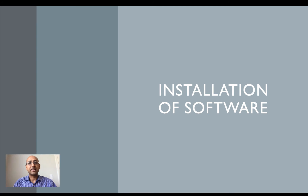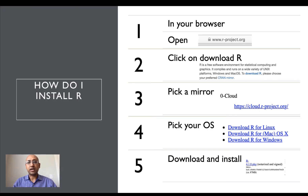Let us now take a look at the installation of R and R Studio. To install R, open your browser to www.r-project.org and click on the link to download R. You will then find a list of mirrors — these are places online hosting the file required to install R on your computer. Pick any mirror, and you will be directed to select the installation package corresponding to your operating system.